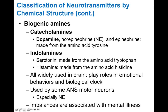The indolamines include serotonin and histamine. Serotonin is made from tryptophan — in fact, serotonin is 5-hydroxytryptophan. Histamine is made from histidine. So what's interesting is that these biogenic amines are actually made from amino acids; the catecholamines and indolamines are basically just made from different types of amino acids.